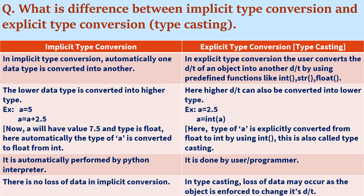Implicit type conversion is done automatically by the Python interpreter, while explicit type conversion is done by the programmer. In implicit conversion there is no data loss, because the lower type is converted into a higher type — like keeping something in a bigger vessel. But in explicit type conversion, you are moving from a bigger vessel to a smaller one, so data loss may occur. As seen in the example, a value of 2.5 converted to int becomes 2 — the .5 is lost. So in type casting, loss of data may occur.